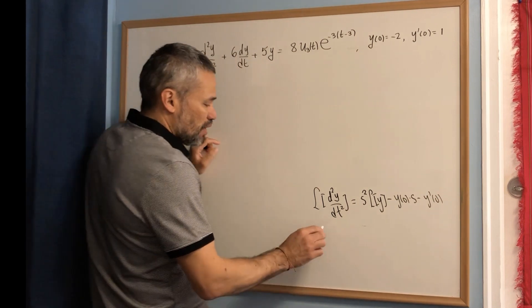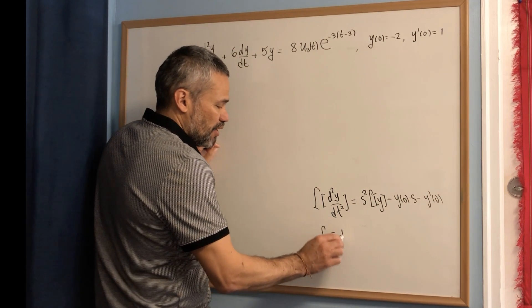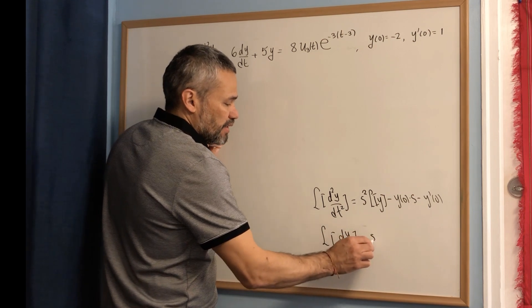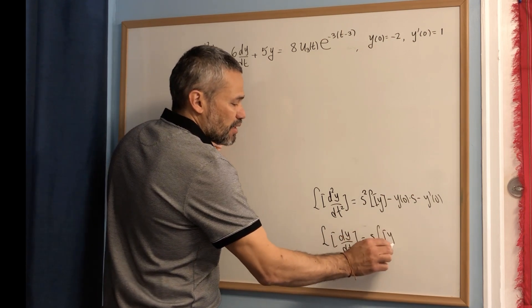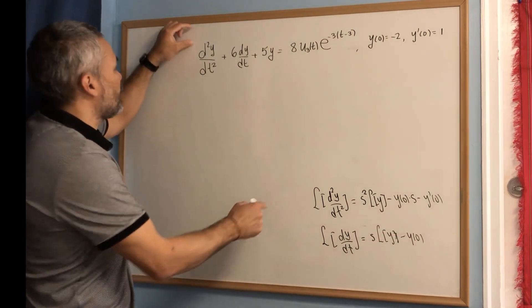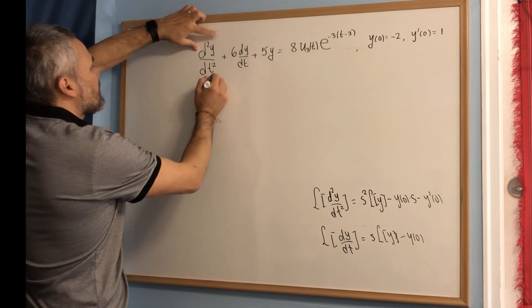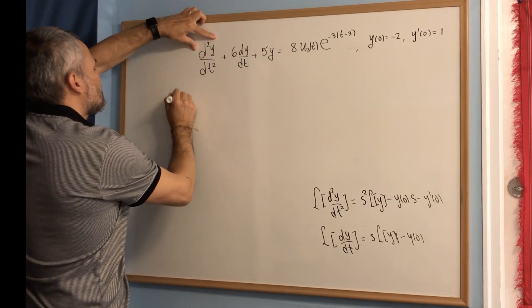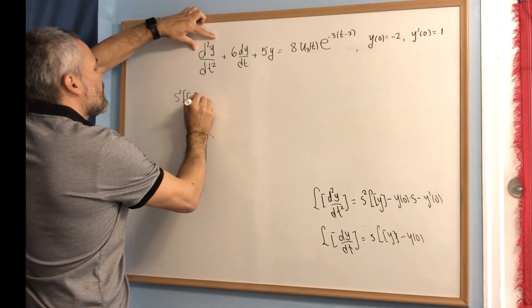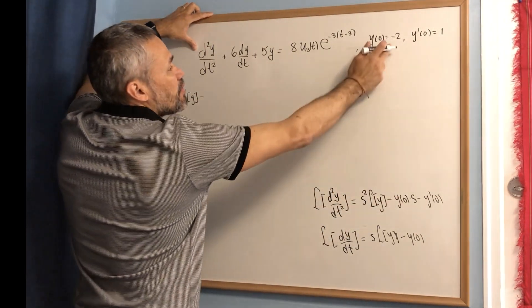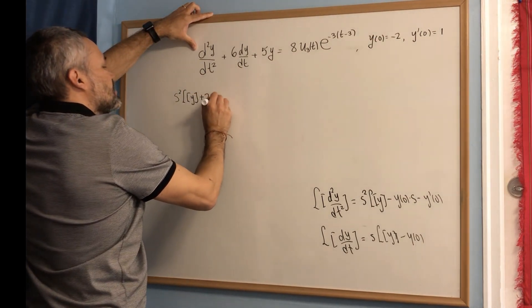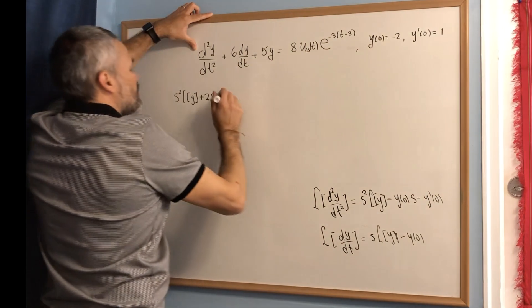We also need to use this formula for the first derivative: s times L{y} minus y(0). By applying these two formulas, we get that the Laplace transform of the second derivative is s squared L{y} minus y(0). Since y(0) is negative 2, that term becomes plus 2s, minus y'(0).